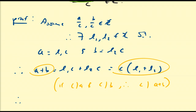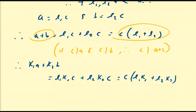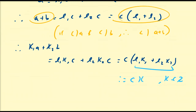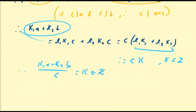If I multiply A by K1, then K1·A plus K2·B equals L1·K1·C plus L2·K2·C, which equals C times (L1·K1 plus L2·K2). This expression in parentheses is just an integer K, so we can write this as C times K, where K is an integer because integers are closed under addition and multiplication. Therefore K1·A plus K2·B divided by C equals K, which is in the set of integers, meaning C divides this linear combination of A and B — which is what we sought to prove.